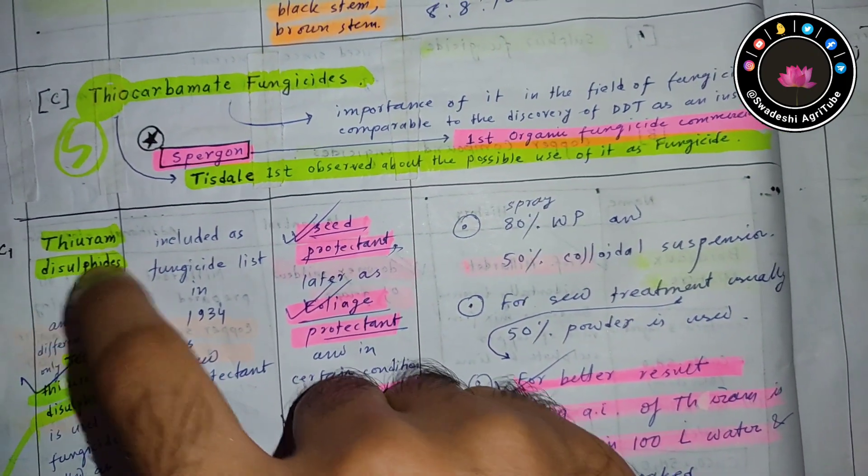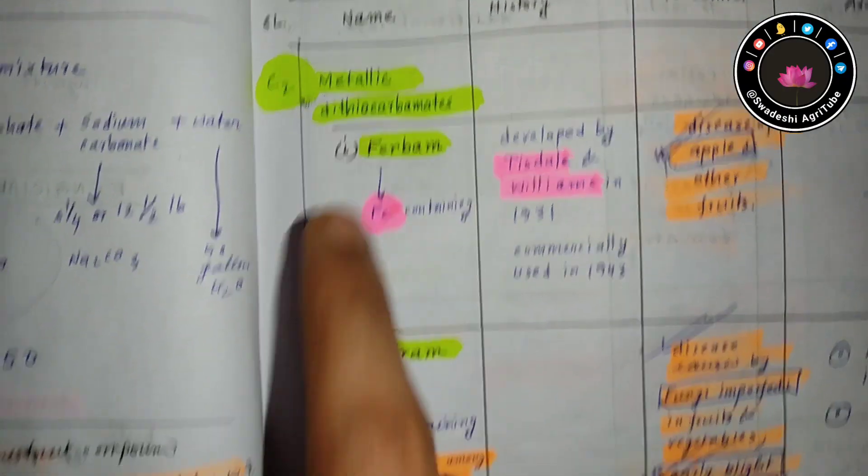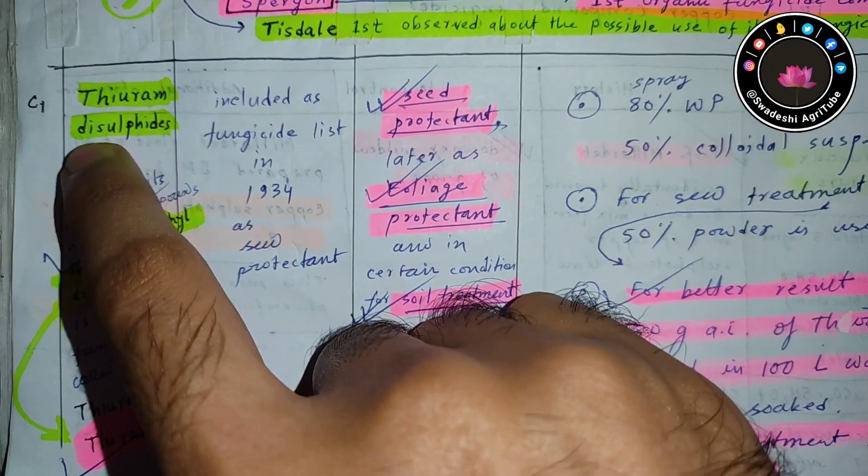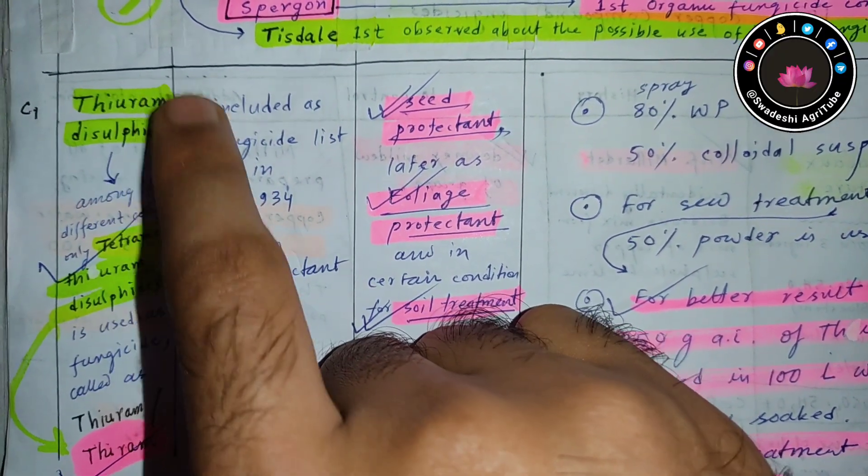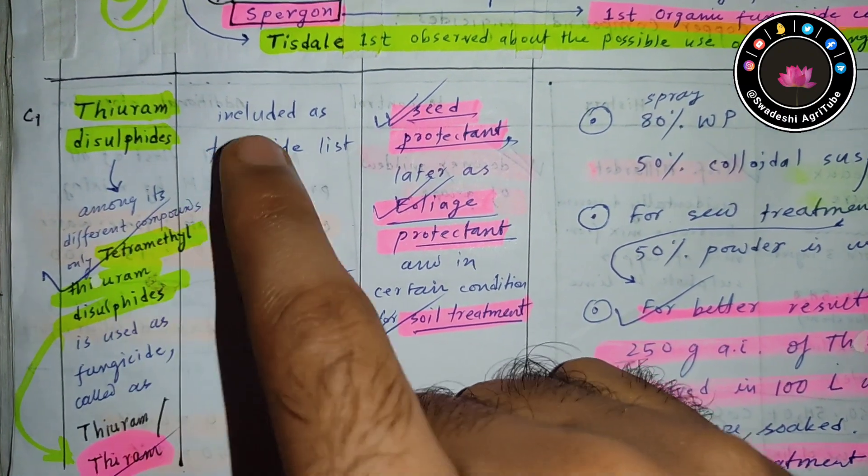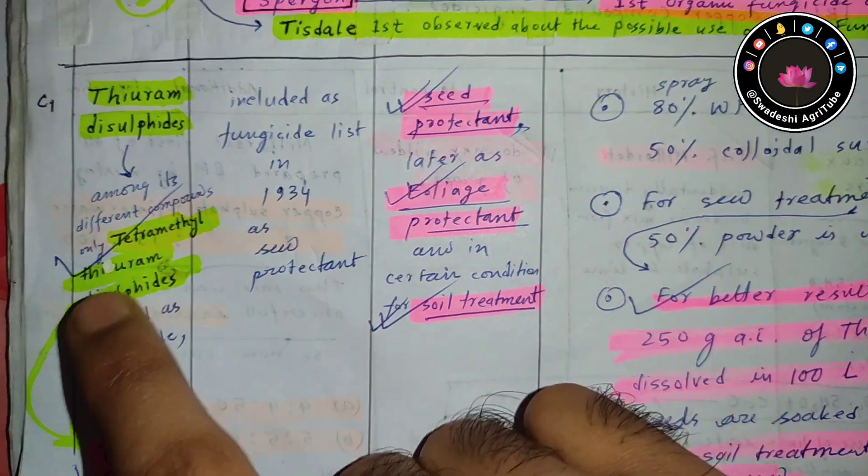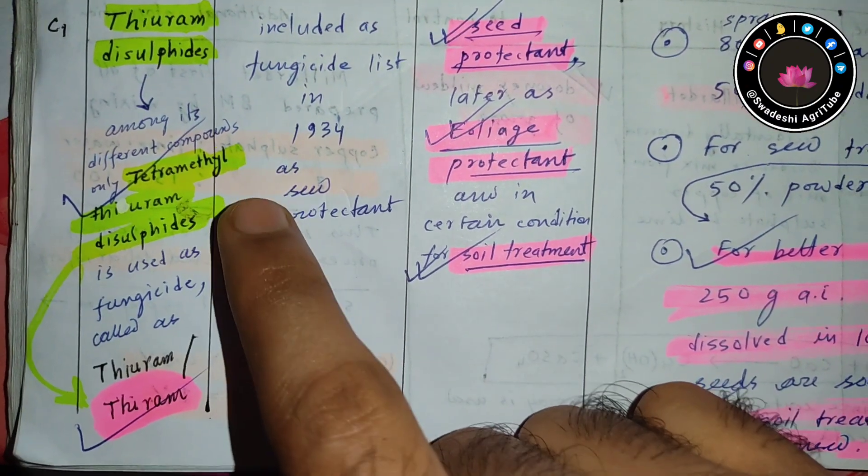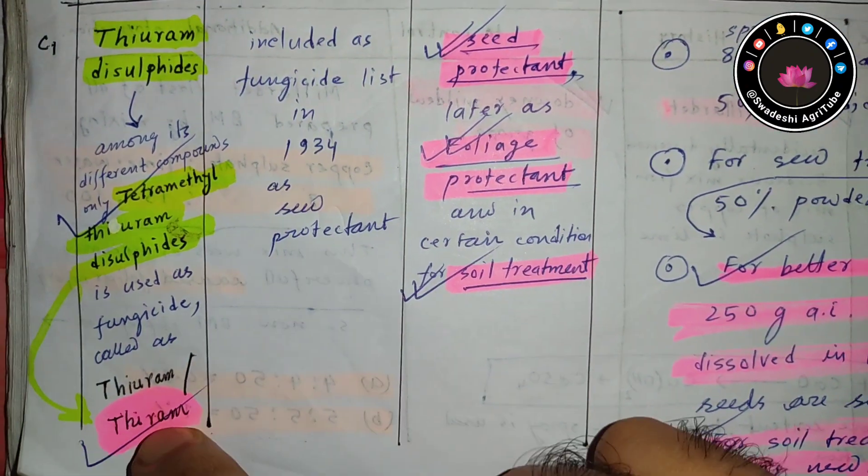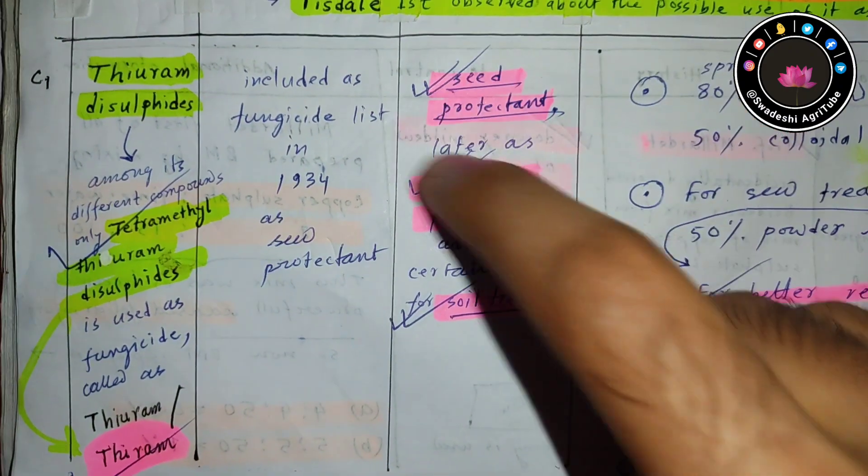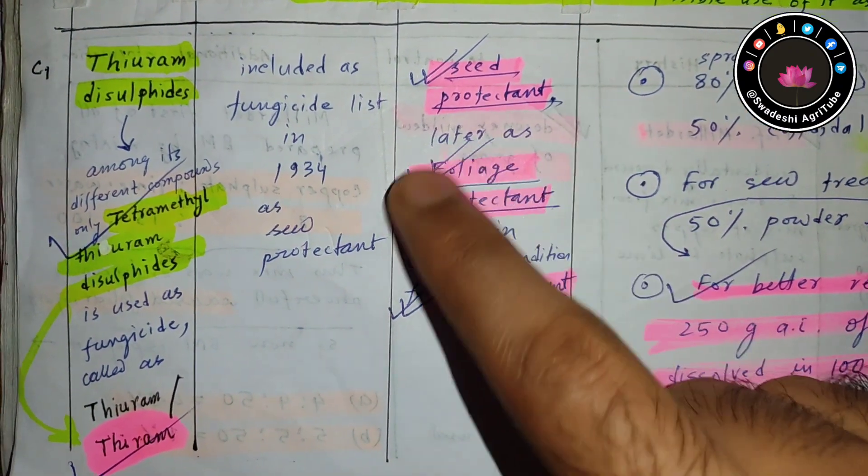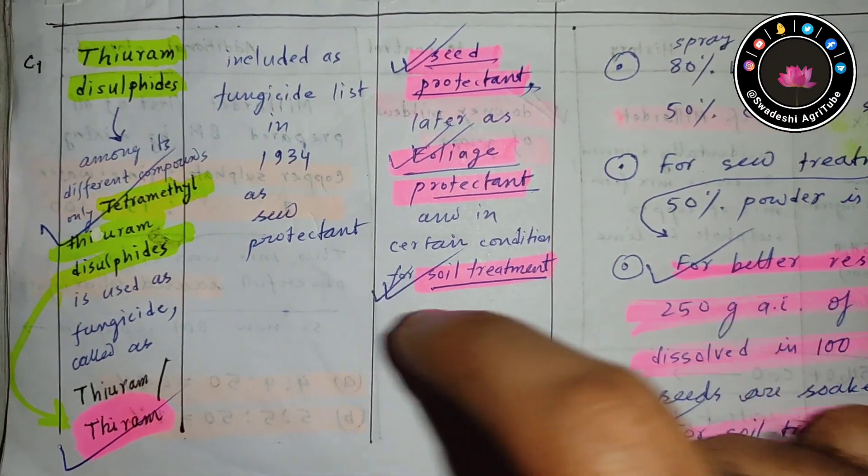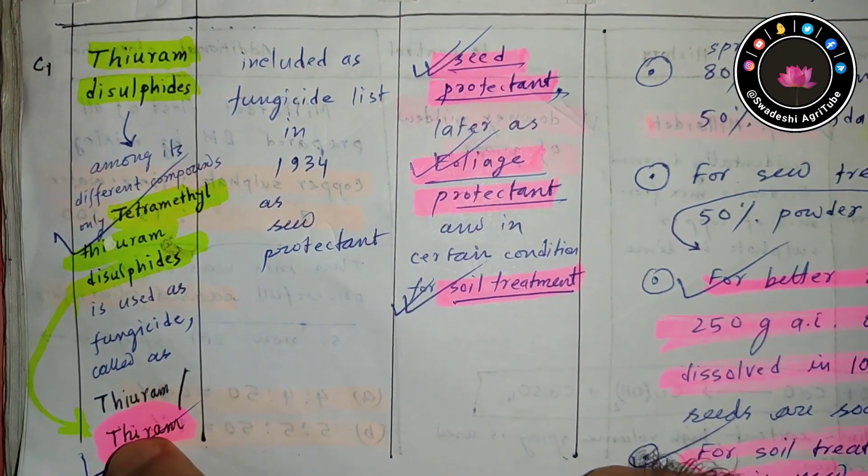One group is thiram disulfides. Under it there are many derivatives. One is tetramethyl thiram disulfide, which is famously known as thiram. Thiram is an important seed protectant. It can also be used as foliar protectant and for soil treatment. Thiram is the tetramethyl derivative of thiram disulfide.